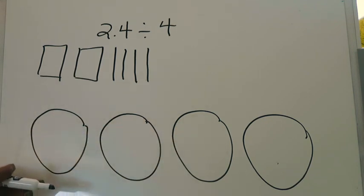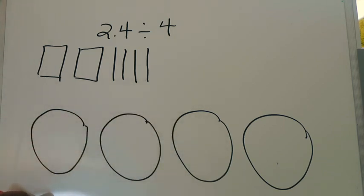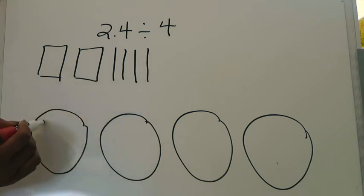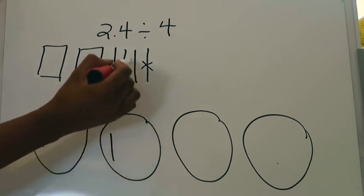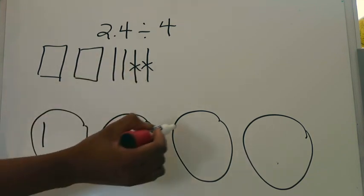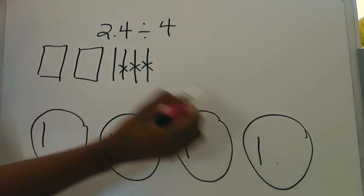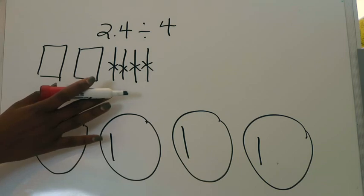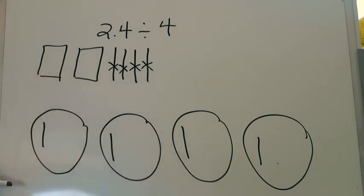Starting with my tenths, I'll place a piece in each space and cross it out as I go: one tenth in each of the four groups, crossing each out. Luckily that was easy — I had exactly four tenths and exactly four spaces, so I'm done with the tenths.